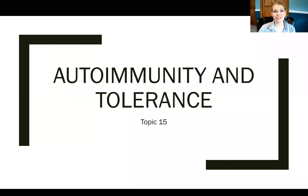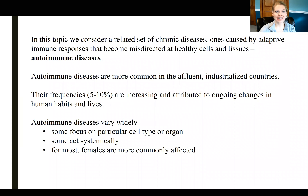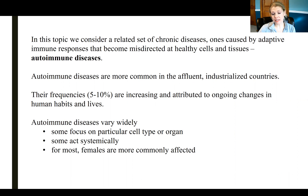For topic 15, we're going to move into yet another situation in which the immune system, although developed to protect the body, actually harms the individual instead. We'll look at autoimmunity and how tolerance is breached to allow the immune system to actually attack cells and tissue — a related set of diseases derived from the fact that the adaptive immune response is misdirected and starts to attack self-tissues, which we call autoimmunity or autoimmune diseases.